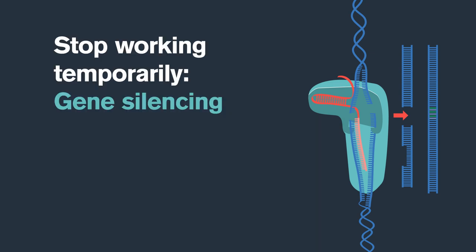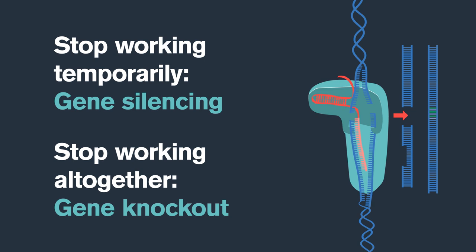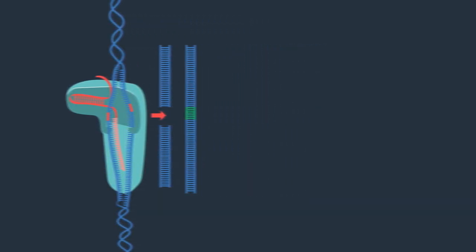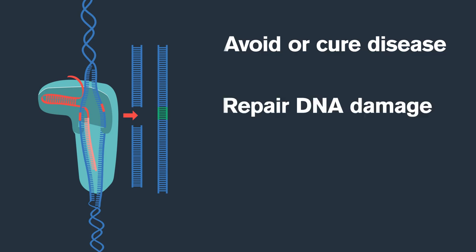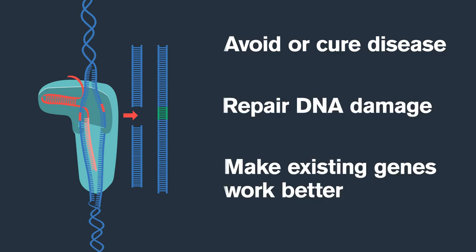It can also make genes stop working temporarily, which we call gene silencing, or stop working altogether, which we call a gene knockout. There are many ways the CRISPR system can be used. It could help avoid or cure disease, repair DNA damage, or even make existing genes work better.